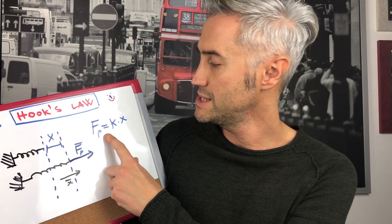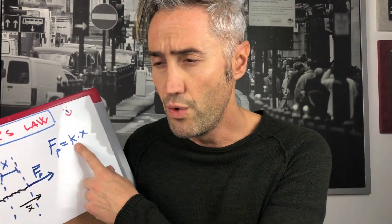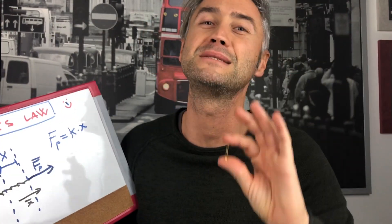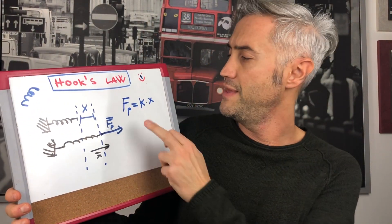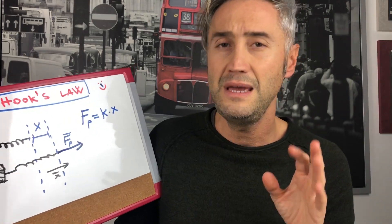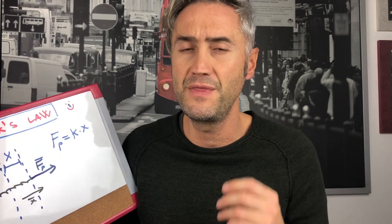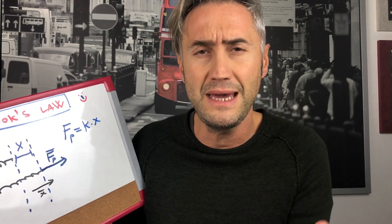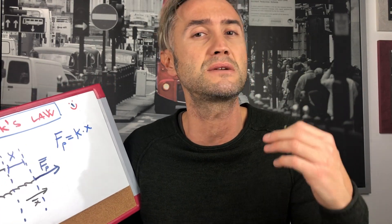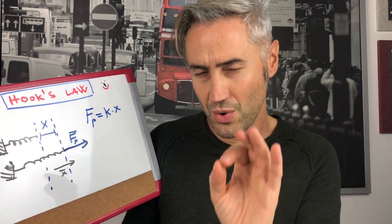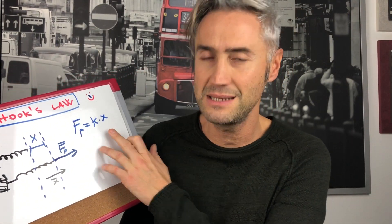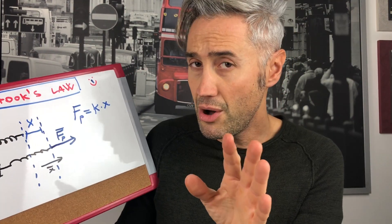It turns out that the force we needed to stretch it by distance X is proportional to X: F_P equals K times X, where K is a proportionality constant, also known as the spring constant. This equation works up to a limit — once you pass the elasticity region, the spring can elongate without much extra force, so we are going to focus on the elasticity region where F and X are proportional.